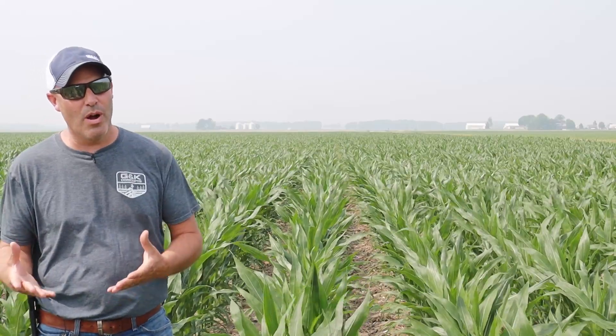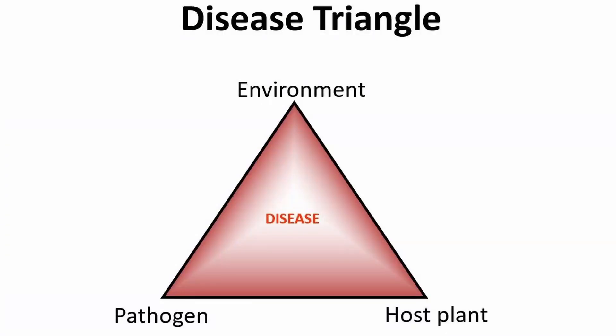Now let's talk about what it takes to get tar spot to show up. Any disease — whether it's corn, beans, wheat, whatever — three things have to line up, and it's what's called the disease triangle. One is the host, the second is the pathogen, and the third is the environment.